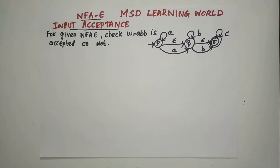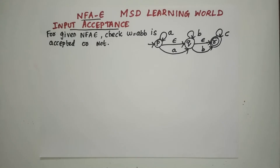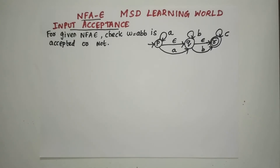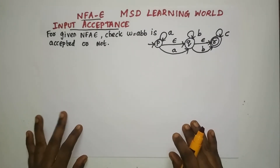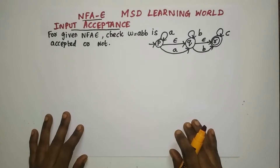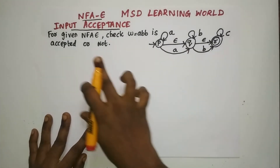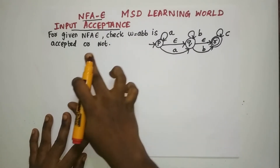Welcome back to MSD Learning World. In this video, we are going to check how to find whether the given input is accepted by the NFA epsilon machine. This process will be similar to what we have done with DFA and NFA, but there may be slight variation in some of the steps. The given problem is: for the given NFA epsilon, check whether W equal to ABB is accepted or not.